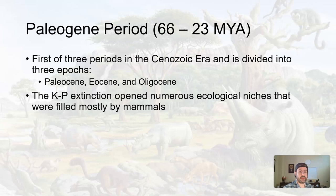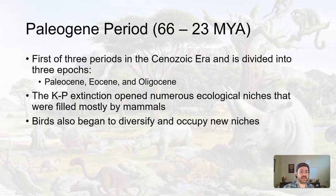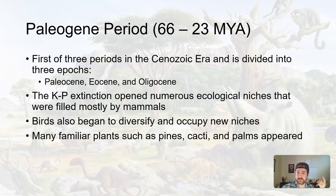The Cretaceous-Paleogene, or KP extinction, separated the Mesozoic from the Cenozoic — the Cretaceous period from the Paleogene period — and opened up numerous ecological niches that were filled mostly by mammals. With the dying out of all these organisms, other ones came to prominence. Birds also began to diversify and occupy new niches. Many familiar plants such as pine trees, cacti, and palms first appeared during the Paleogene as plants evolved.